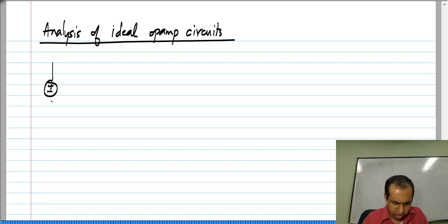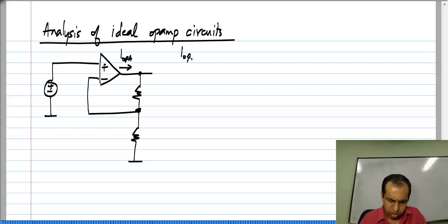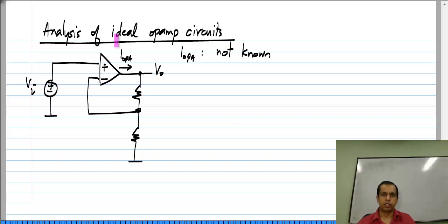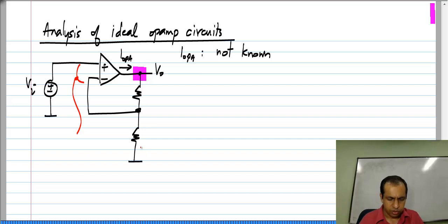So what we do then is the following. The problem is that we do not know what is the current at the output of the op amp. If I call this I_OPA, it is not known — it is unrelated to the characteristics of the op amp. We cannot write some equation based on what the op amp is. This is similar to how, when we had voltage sources either independent or controlled, we could not write an equation for the current through the voltage source from the property of the voltage source. So instead we have to use the virtual short equation.